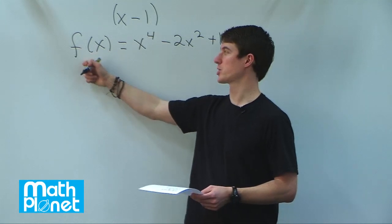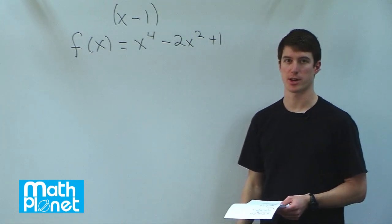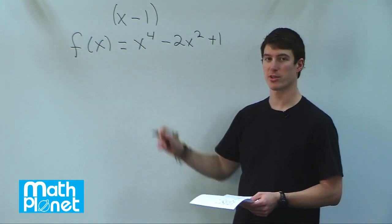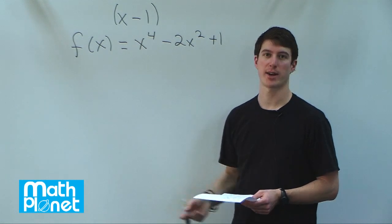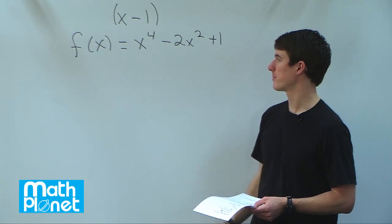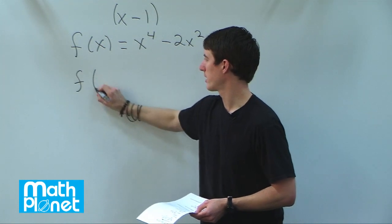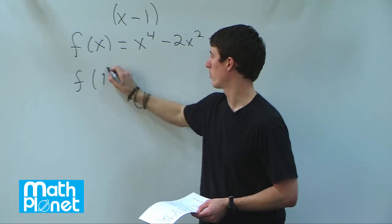We can check by evaluating the original function at x equals 1. If we get 0, then we know that it would have factored out to give us x minus 1 anyway. So let's evaluate this at x equals 1.